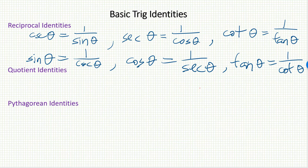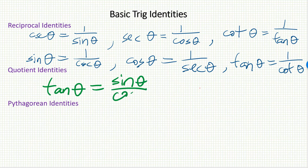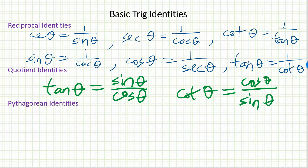Let's turn to the quotient identities. There are two of these. The first one links up the tangent function with the sine and cosine functions: tangent theta is the quotient of sine theta and cosine theta. The other one is similar for the cotangent function — since tangent and cotangent are reciprocals of each other, cotangent must equal cosine over sine.